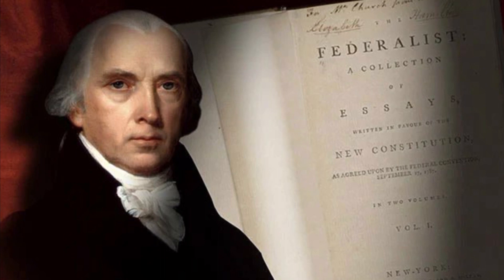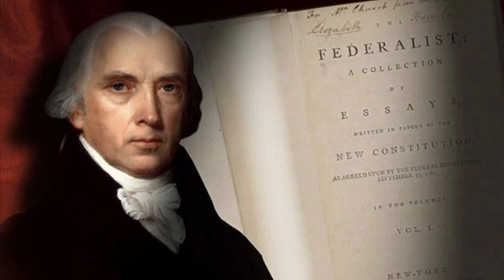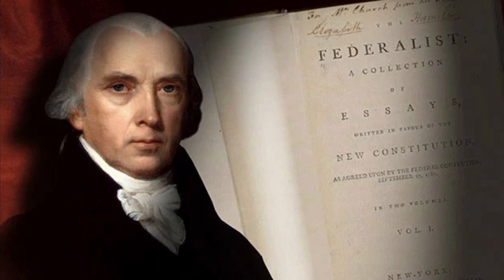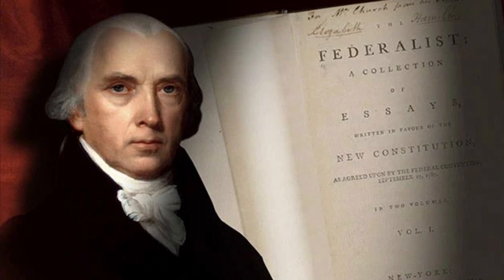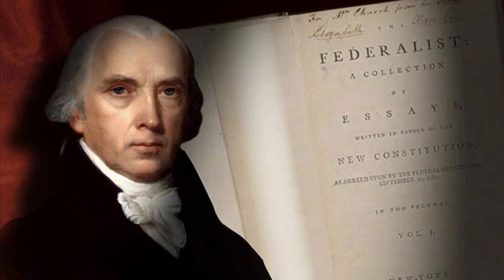Madison lays out two key approaches to addressing the problem of factions: eliminating their causes or controlling their effects. The former would mean suppressing liberty, which Madison saw as unacceptable. Instead, he advocated for the latter. Madison writes, 'The latent causes of faction are sown in the nature of man.' Here, Madison acknowledges that factions are an inherent part of human nature — people will always have different opinions, interests, and affiliations. So trying to eliminate factions entirely is unrealistic.